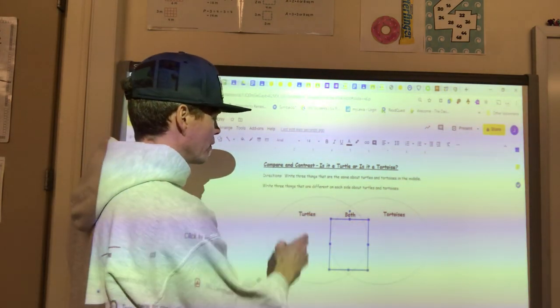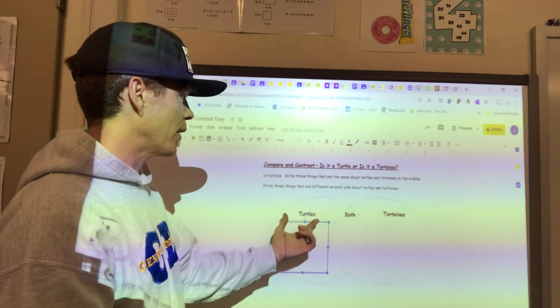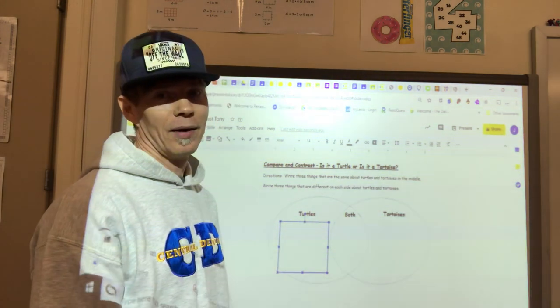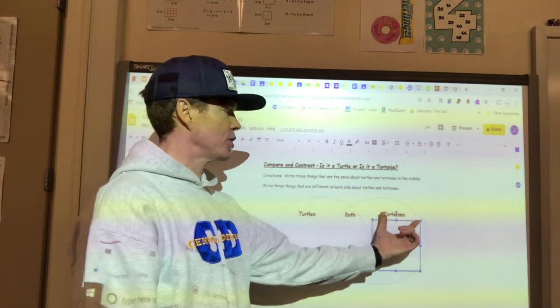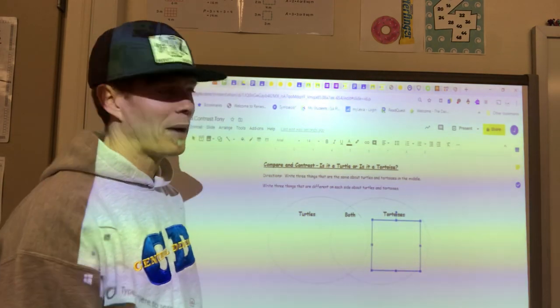Then you're going to go ahead and you can click over on the turtle side and you can write items that are only true about turtles. When you are done with the turtles you can come over to the tortoise and you can click here and you can type into the box.